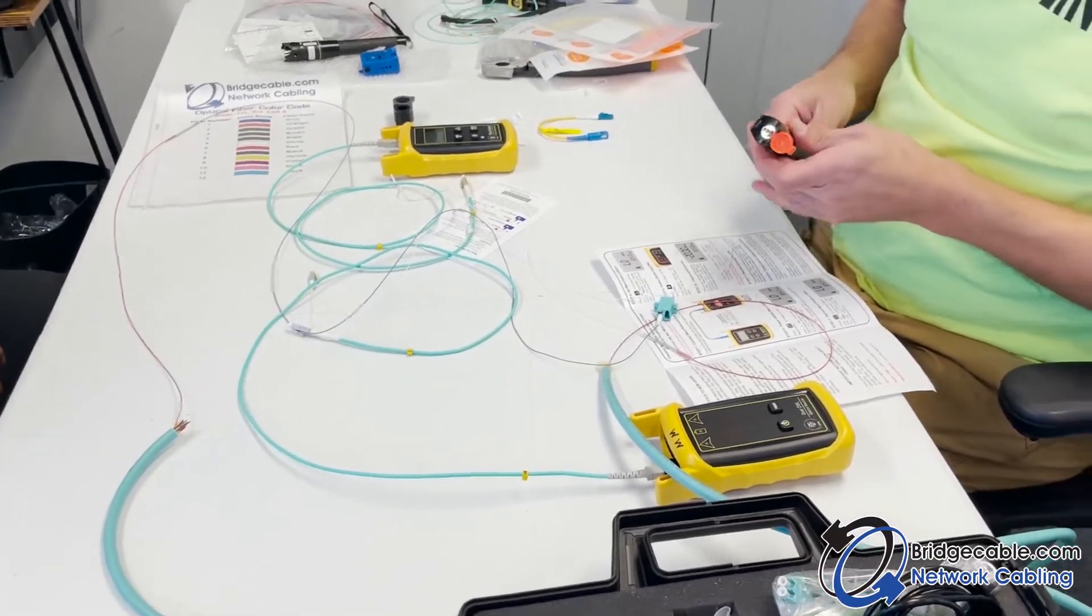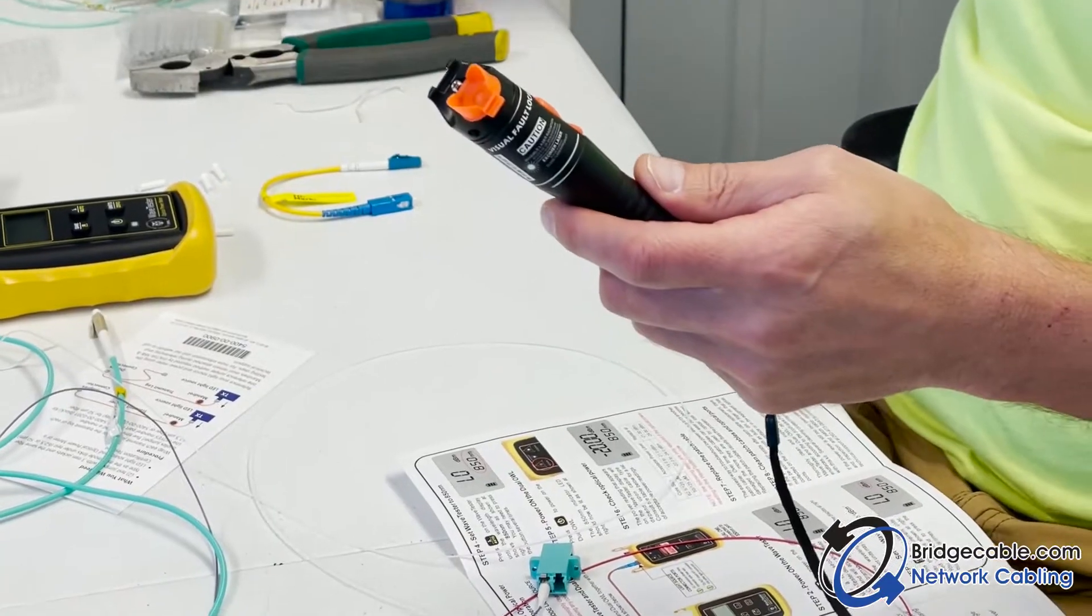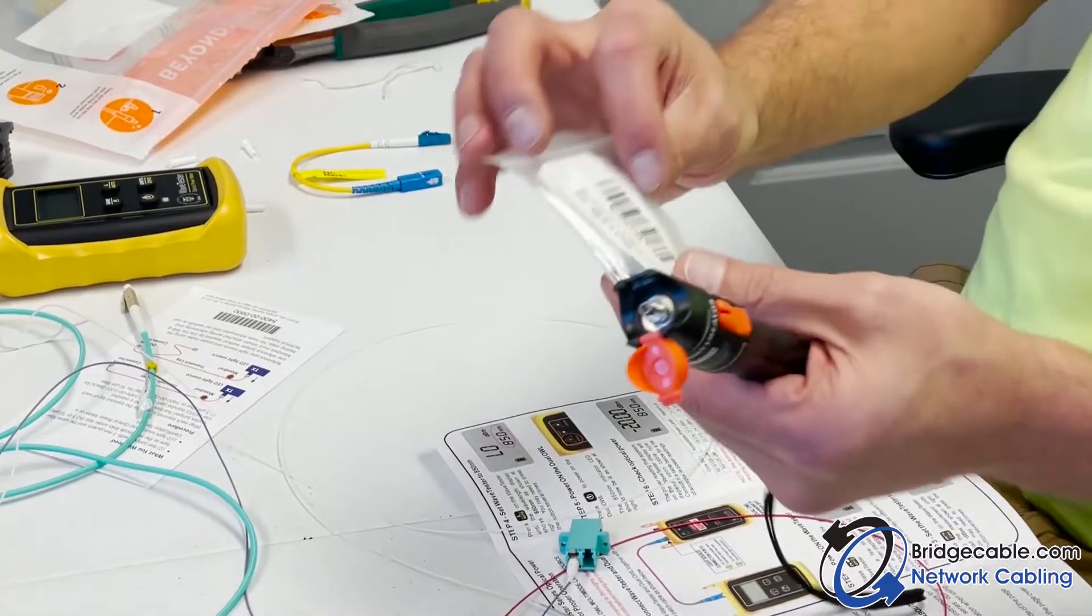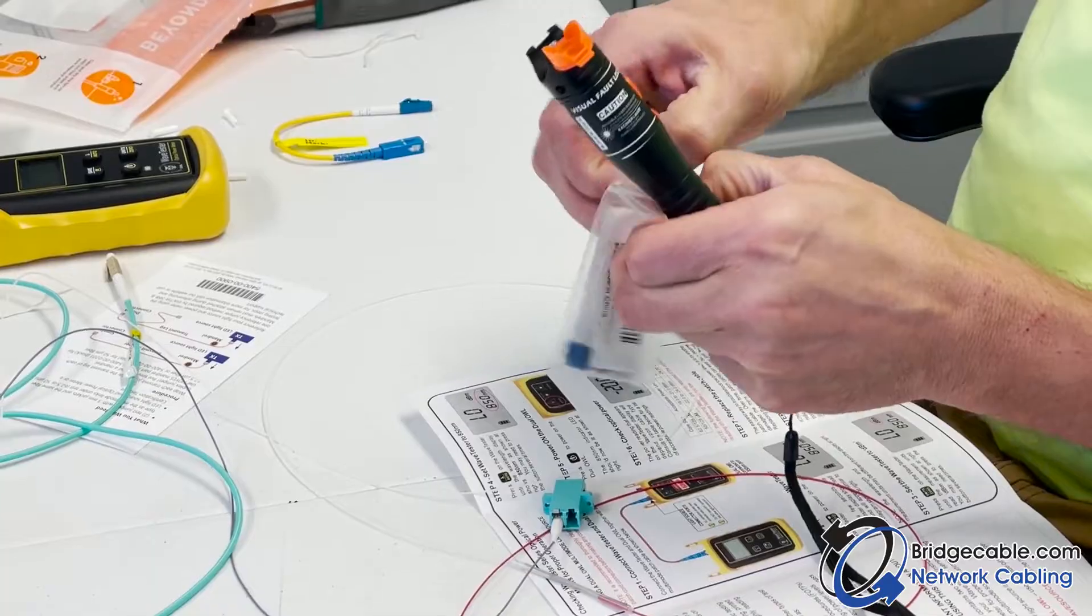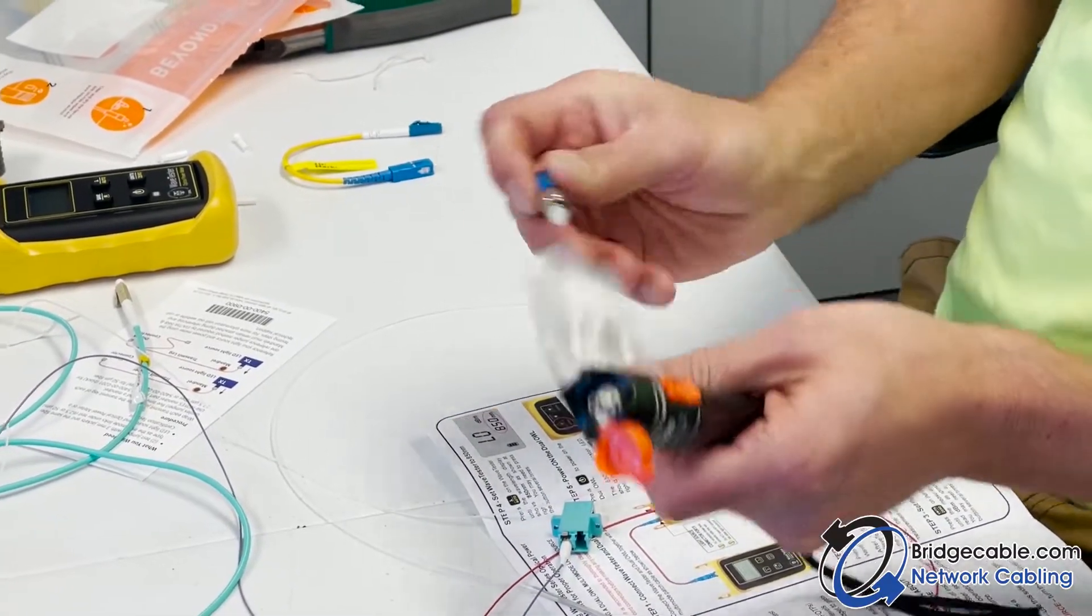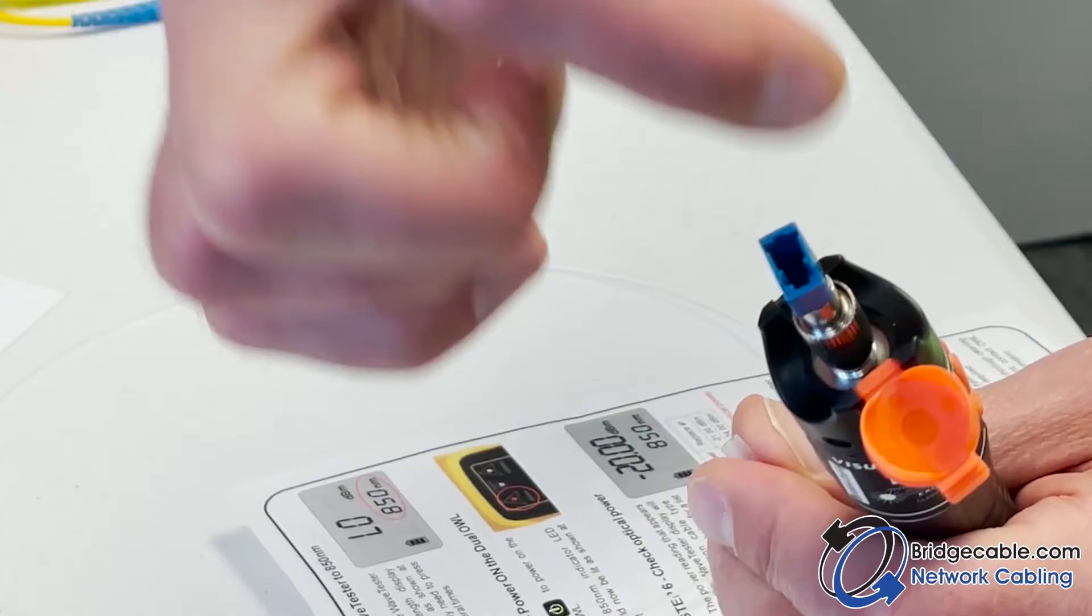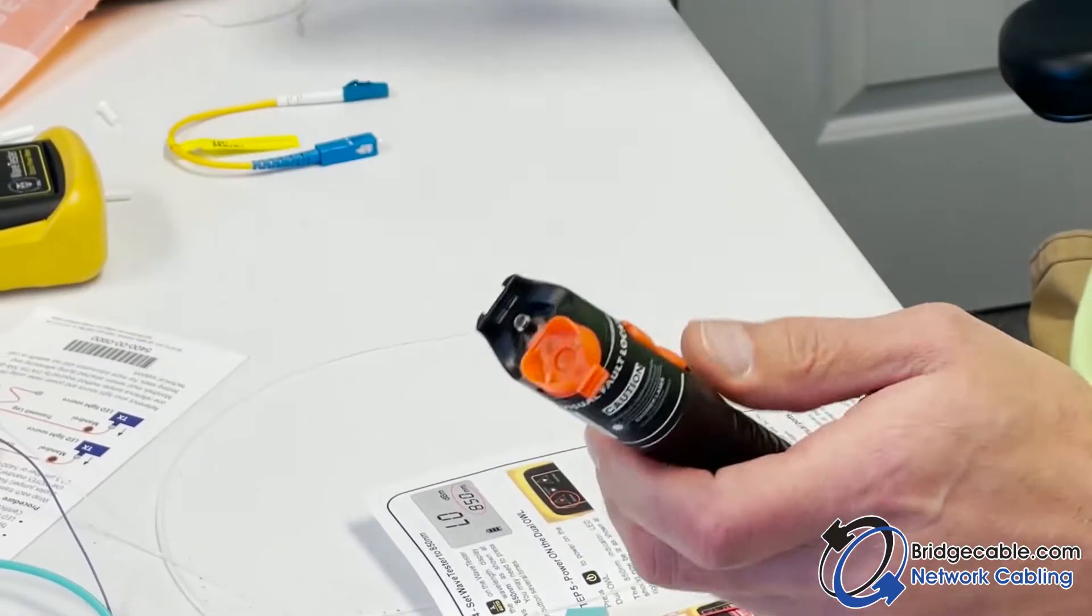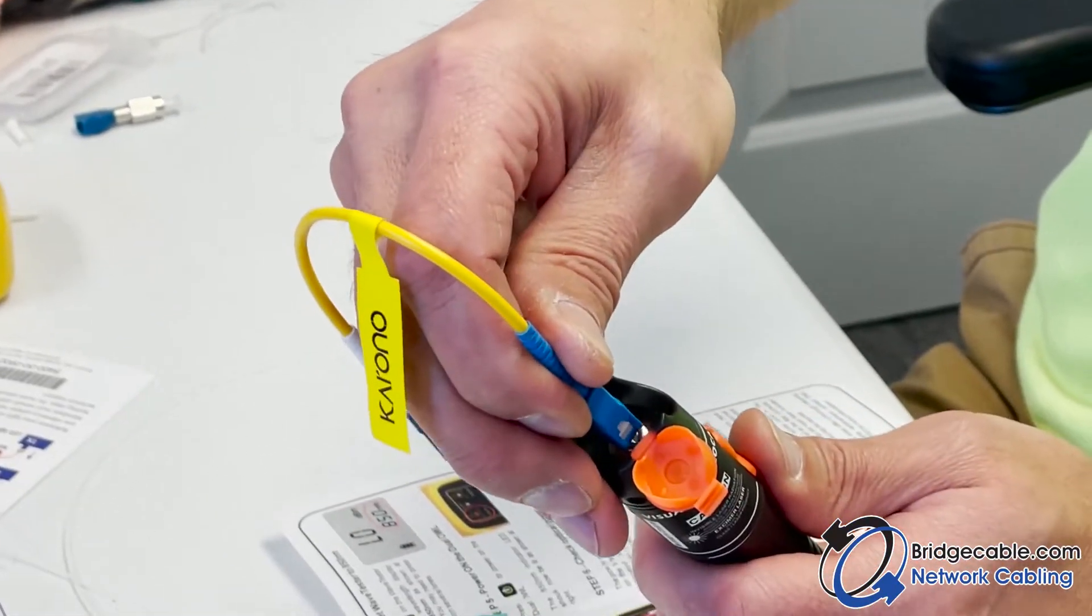You can use the FC connector, which is an adapter that goes on here that you can plug an LC right into. This will pop right onto the end, and then you can plug an LC cord right into it. Or you can use an SC connector which will go on it also, and that will allow your light to come out.